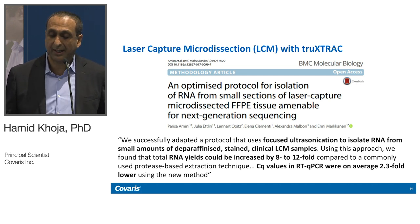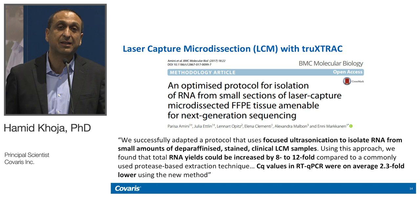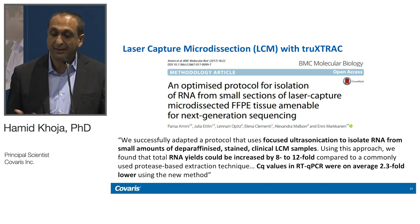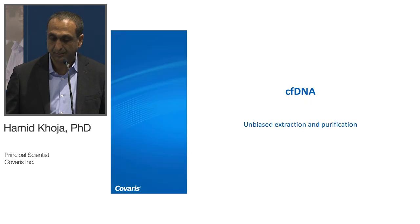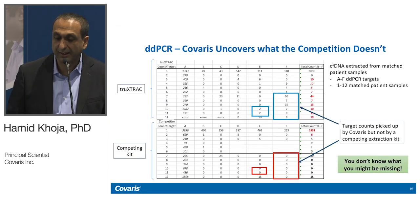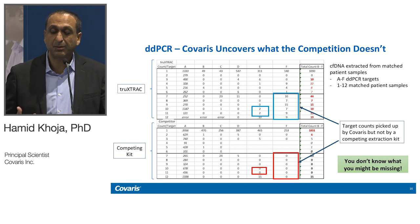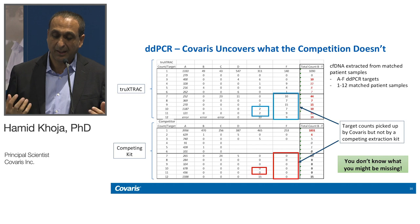Our TruXTRAC kits have also been used in laser capture micro-dissected FFPE samples. A publication indicated they were able to get an increased yield of 8 to 12 fold compared to other methodologies for extracting DNA from LCM samples. They also indicated their CT values were 2.3 fold lower compared to other methodologies used for extracting DNA from these very small sample masses. We've also demonstrated that Kovaris technology can be used for cell-free DNA extraction. In a recent experiment with one of our customers, they were able to pick up with their digital PCR assays mutations that were missed by other extraction methodologies.